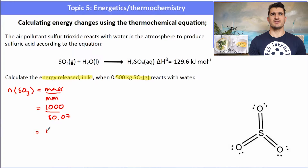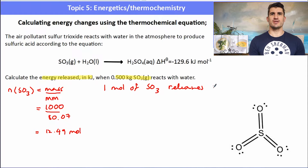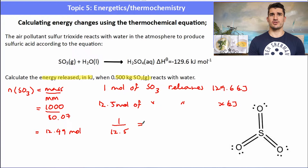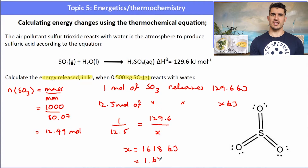We have 12.5 moles of sulfur trioxide. Going back to the equation: for every one mole of SO₃ that reacts with water it releases 129.6 kilojoules. We don't have one mole — we've got 12.5 — so we set up a ratio: 1 over 12.5 equals 129.6 over X. Cross multiplying gives X = 1618 kilojoules, or 1.62 × 10³ kilojoules to 3 significant figures.